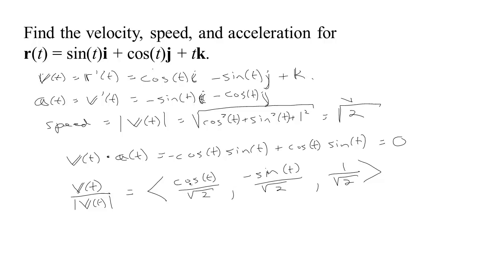It points in the same direction as the velocity, but it has length 1. So you can take the velocity and you can write it as its speed times its direction: root 2 times (cos t over root 2, minus sin t over root 2, 1 over root 2).